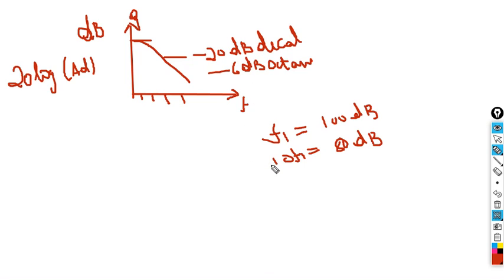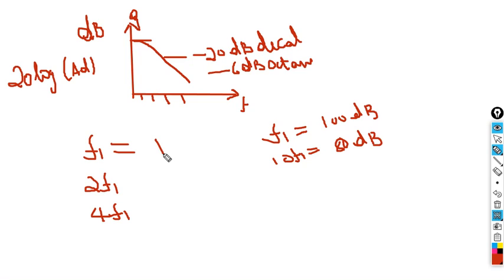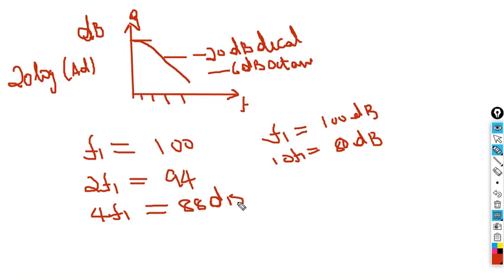The other parameter is used to express when my frequency doubles. Initially frequency is f1, then 2f1, then 4f1 — we use octave scale to express this. At f1 it is 100 dB, at 2f1 it is 94 dB, at 4f1 it is 88 dB per octave. With this, we will now proceed to the other property called CMRR.